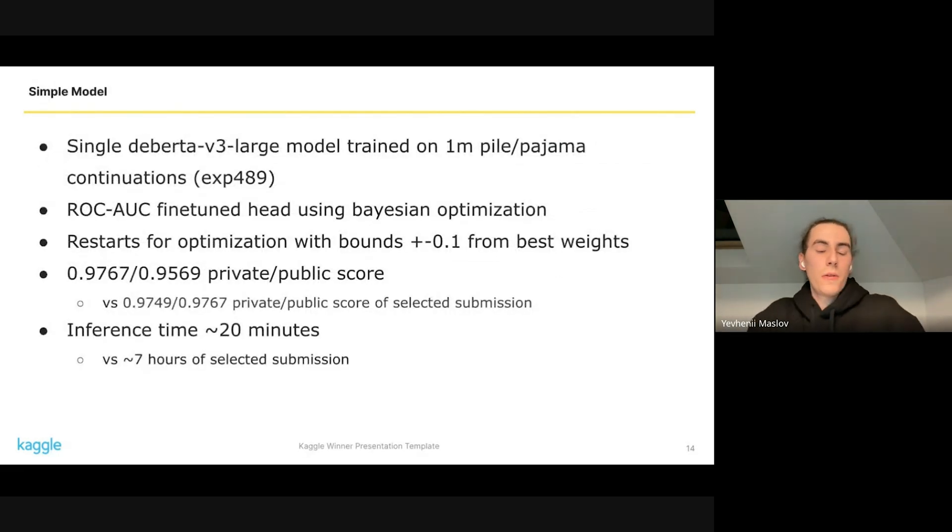We can simplify our solution by using only single DeBERTa model trained on pile pajama continuations, and we can fine-tune head directly on Rocahoc using Bayes optimization. Basically, we took 10,000 random training samples, made embeddings using previous state, then using CatBoost optimized dot product between embeddings and this initialized 1024 vector. The score of this model is 0.976 - it's actually better than the score of our big selected solution.